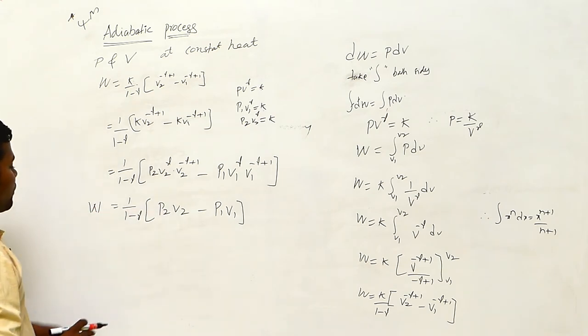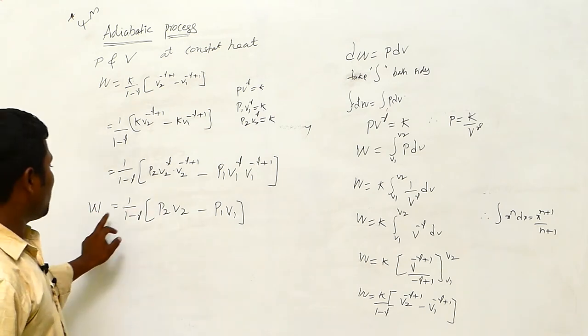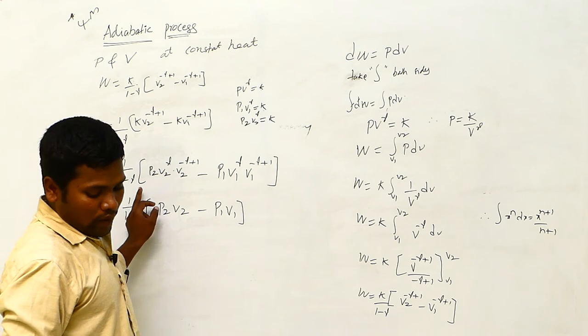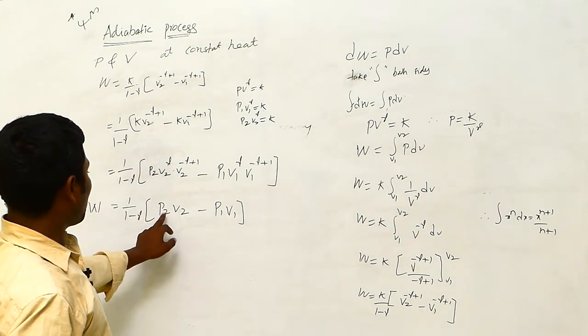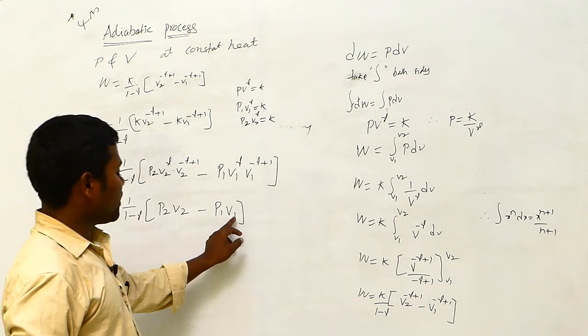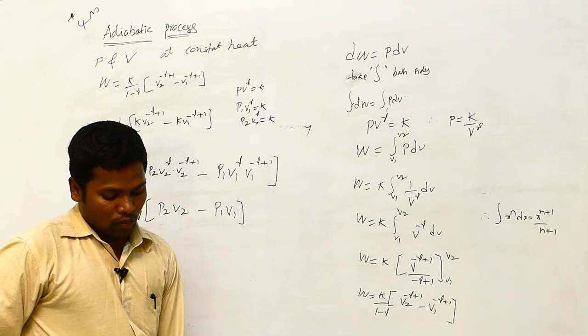Finally, what we get is: W equals 1 divided by (1 minus gamma), times (P2 V2 minus P1 V1).